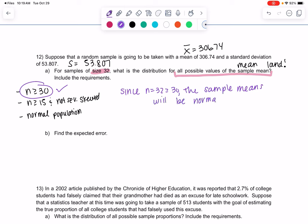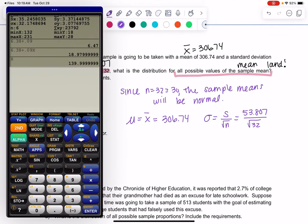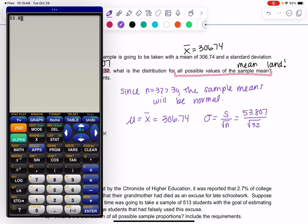So we'll have a normal distribution, and then we'll find the mean and standard deviation. The mean in mean land is just the mean. So the average of the averages is the same, 306.74. And then the standard deviation was the sample standard deviation over square root n. So if you have your calculator, pull that out. We take the standard deviation and divide by the square root of 32.